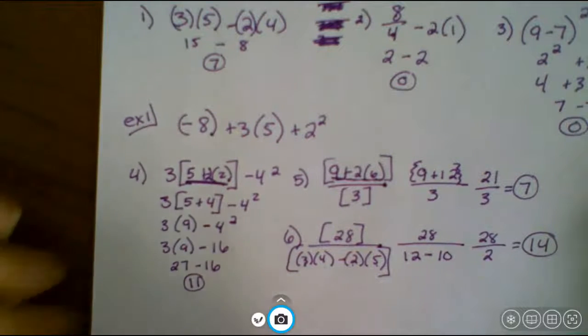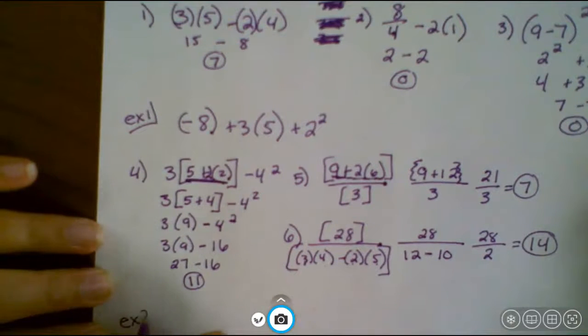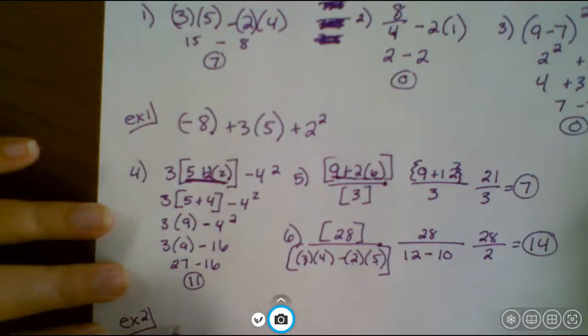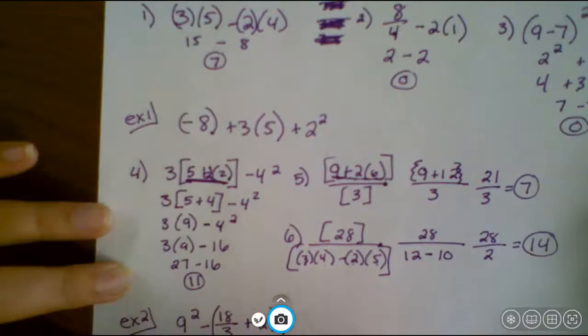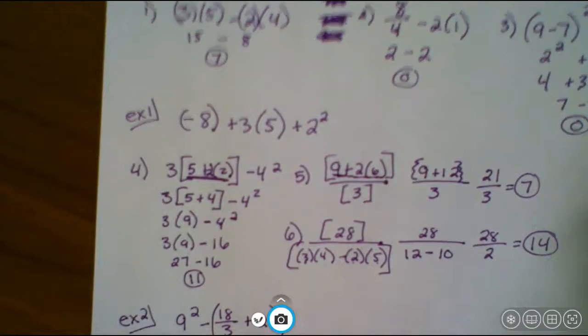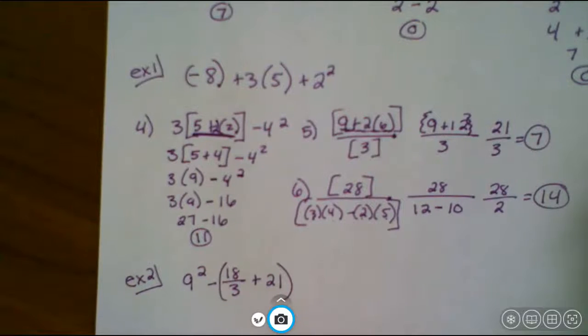So again, I want you to do one on your own. Okay, so write this one down. Nine squared minus 18 over three, and then a plus 21. And that 18 over three plus 21 is going to be in parentheses. So go ahead and write that one down. Pause the video and try it on your own.